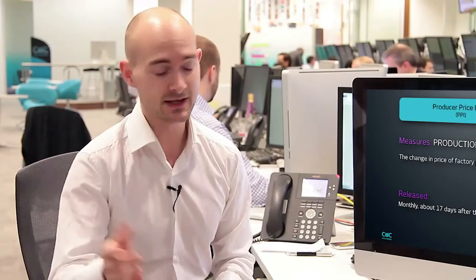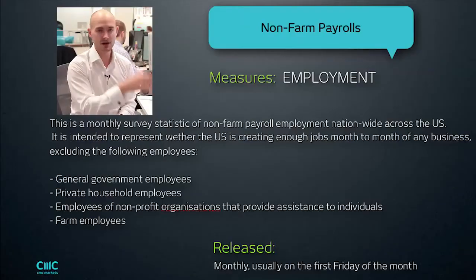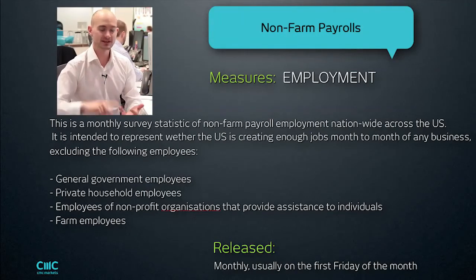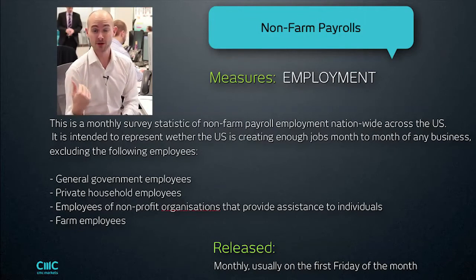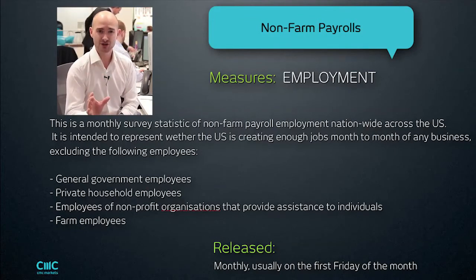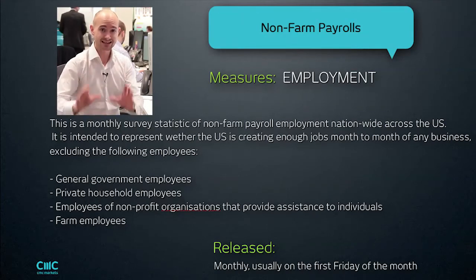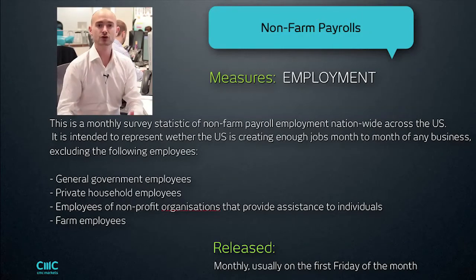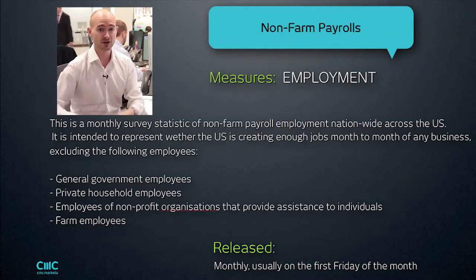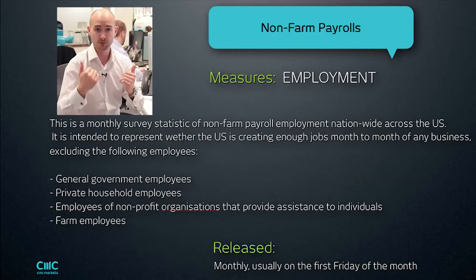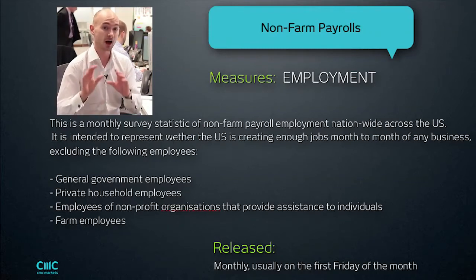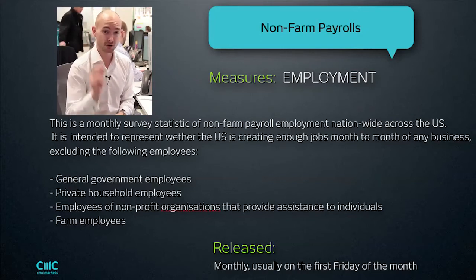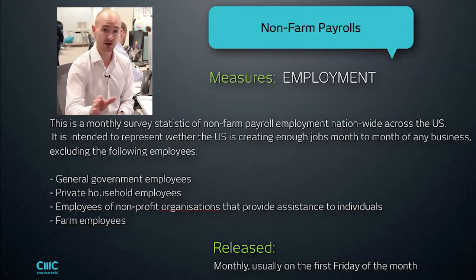The next one is non-farm payroll figures — arguably one of the most important bits of economic data released, full stop. It measures employment for employees, not including farm workers, private sector employees, and non-profit organisations. Farm workers are excluded because they tend to be seasonal. It is the number one bit of economic data that comes out each month — on the first Friday of every single month in the US. If more jobs are being created, that means the economy is recovering. If jobs are being lost and more people are becoming unemployed, that gives you a flavour of how the American economy is doing.